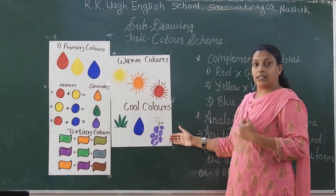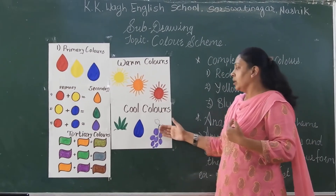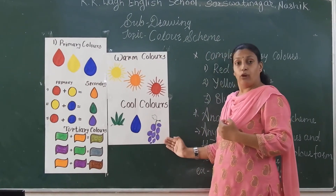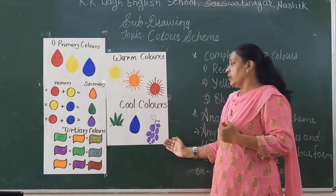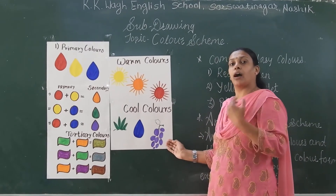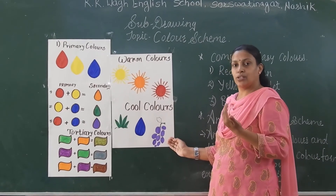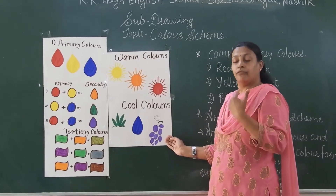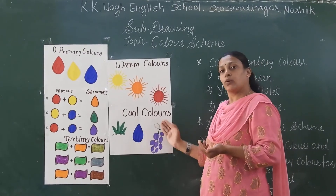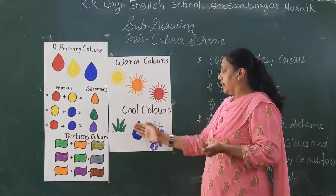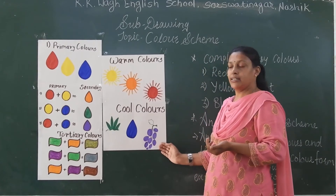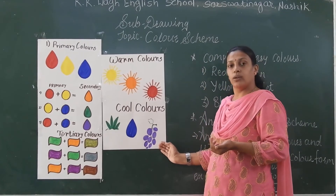Next is the cool color scheme. The cool colors are green, blue, and violet. When we look at these colors, we feel cool. That is why we call them cool colors. Green, blue, and violet are the cool colors.